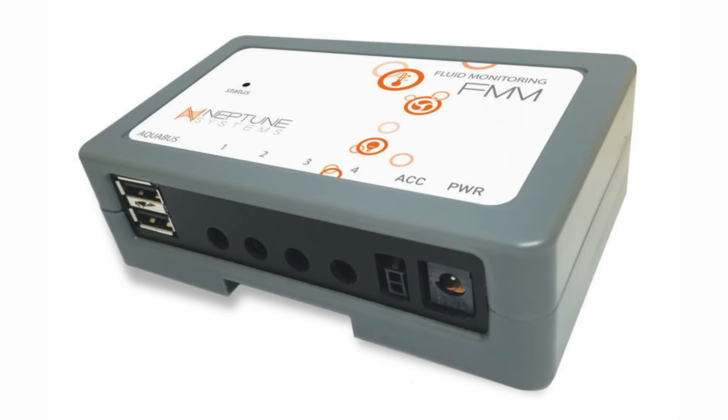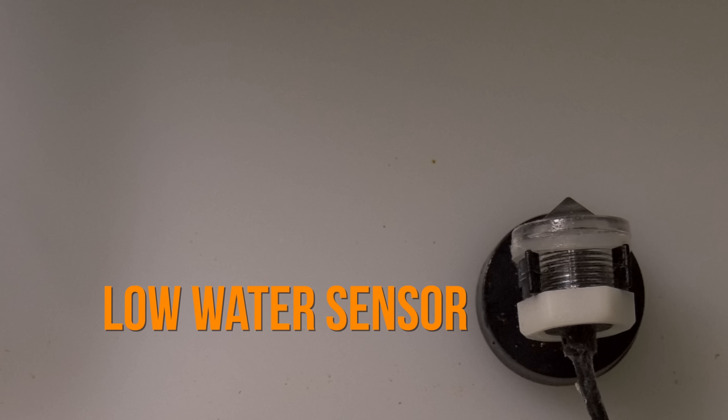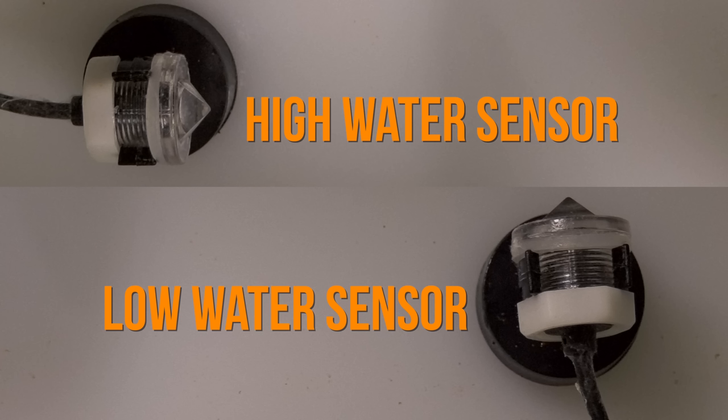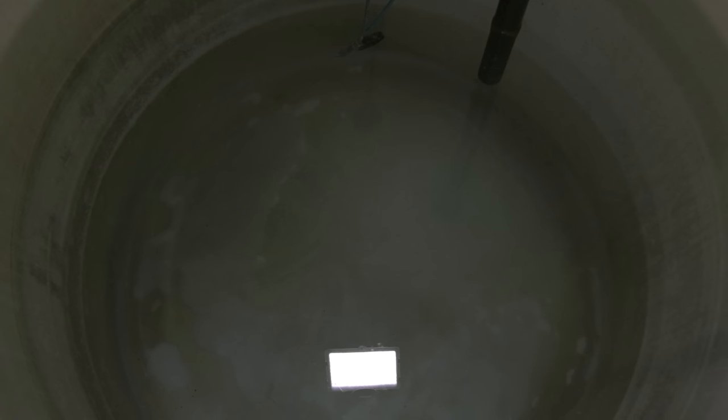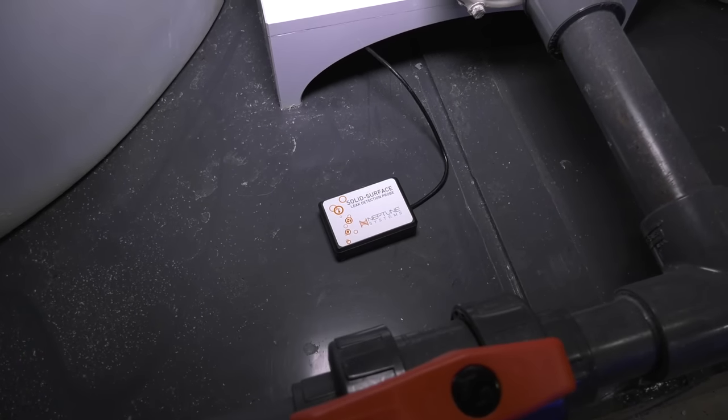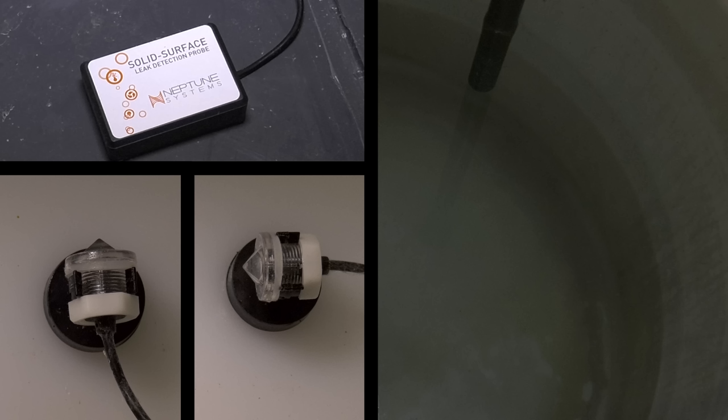The FMM's four ports are utilized as such. One port is for the low water sensor in the RODI vat. Another is for the high water sensor in the RODI vat. The third is for the high water sensor in the saltwater mixing vat. And the fourth is for the mixing tray water on floor sensor. Given the sensor layout, here's where the Apex driven automation kicks in.